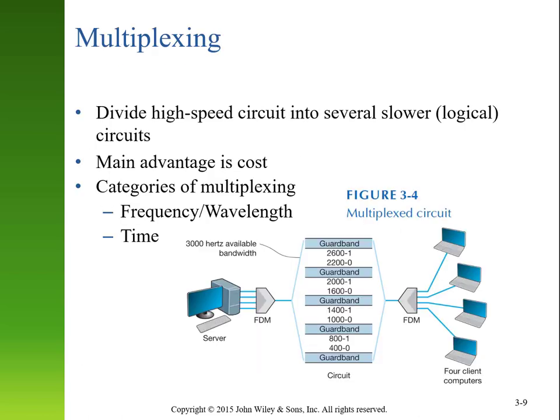Sometimes we need to take a large high-speed circuit and divide it into several slower circuits to accommodate more devices. This happens commonly in wireless networks, where we have a specific set of frequencies and break them into smaller frequency bands for individual devices. For example, anything between 0 and 2600 Hz might be divided so that 400 and 800 Hz are zeros and ones for one device, 1000 and 1400 for another, 1600 and 2000 for a third, and 2200 and 2600 for a fourth. This is a good example of a logical circuit not matching up exactly with the physical circuit.